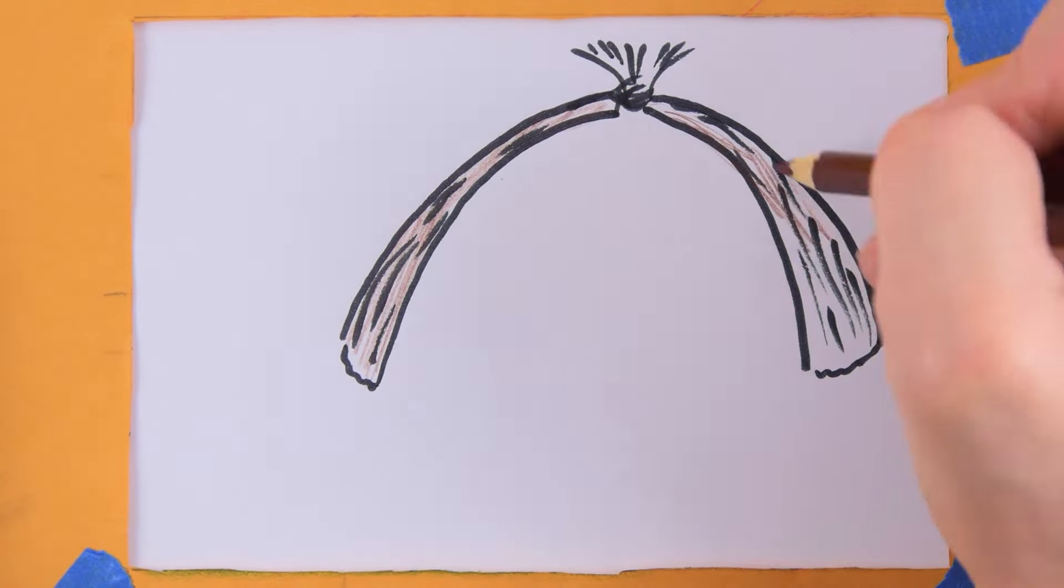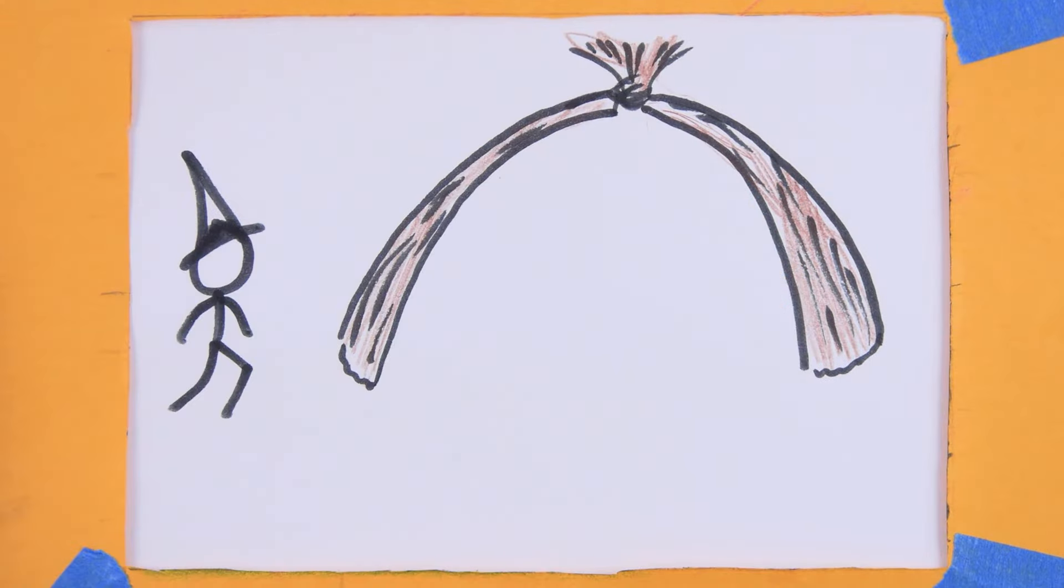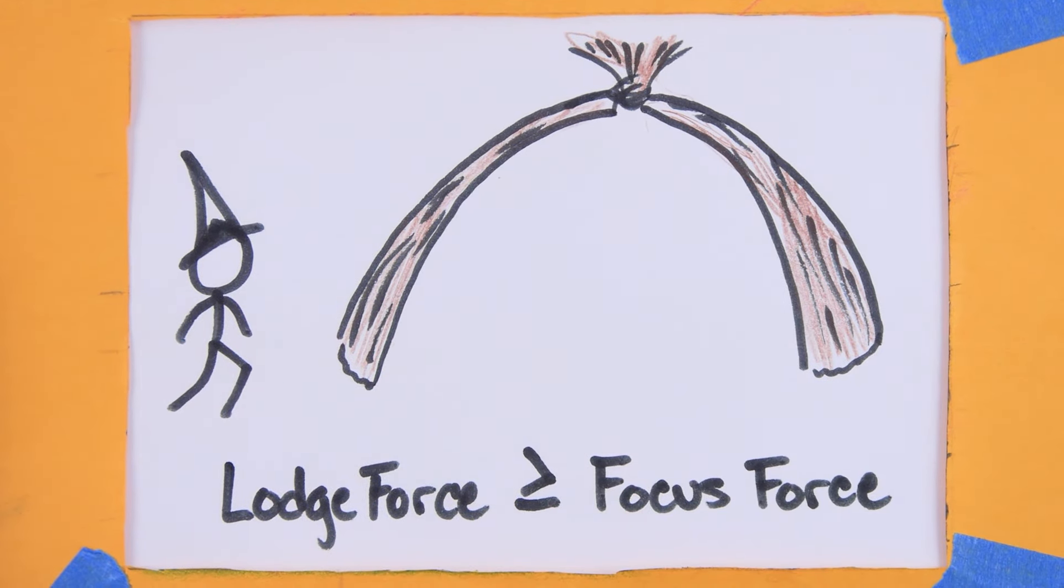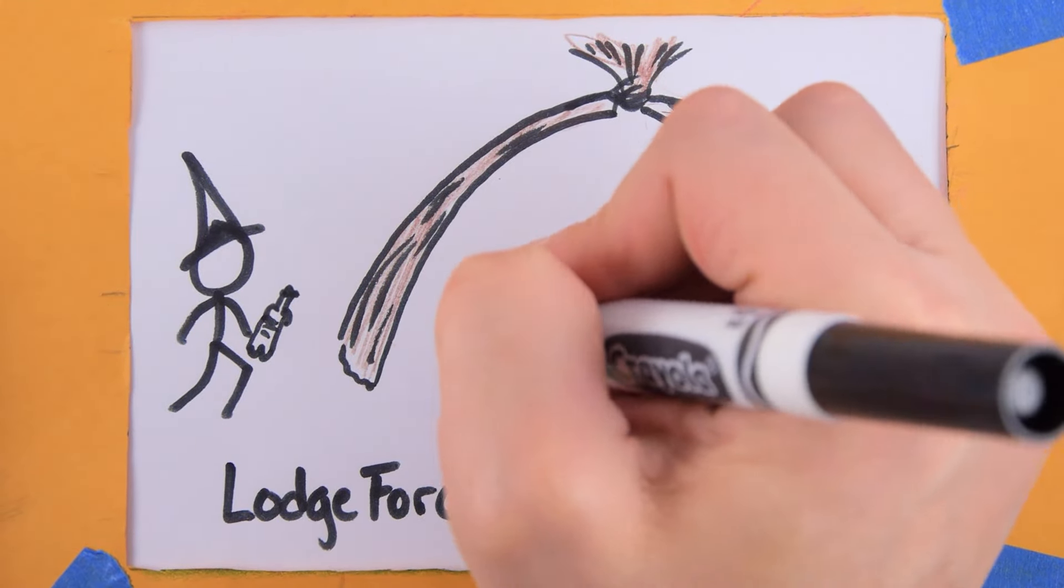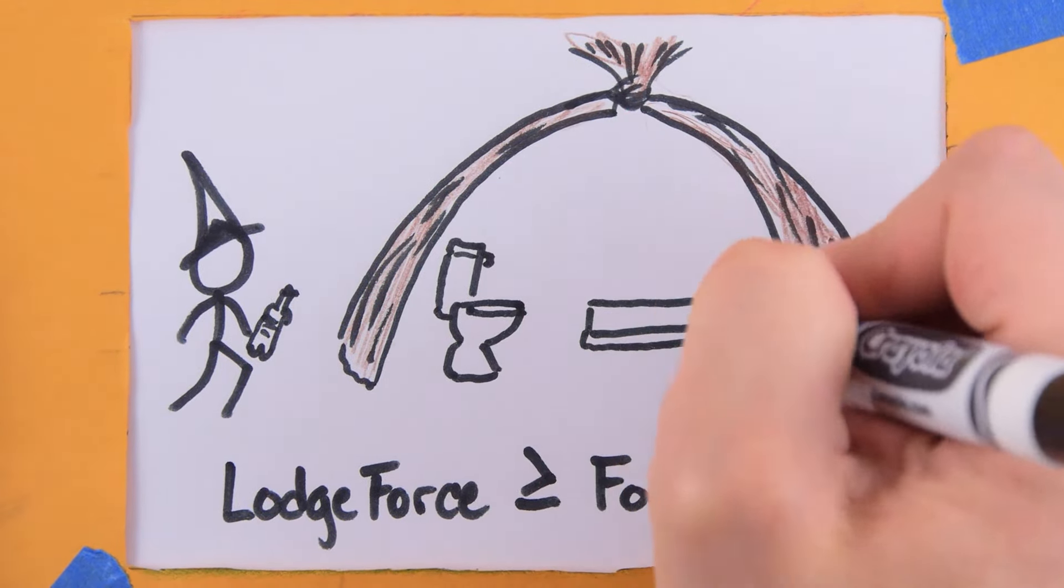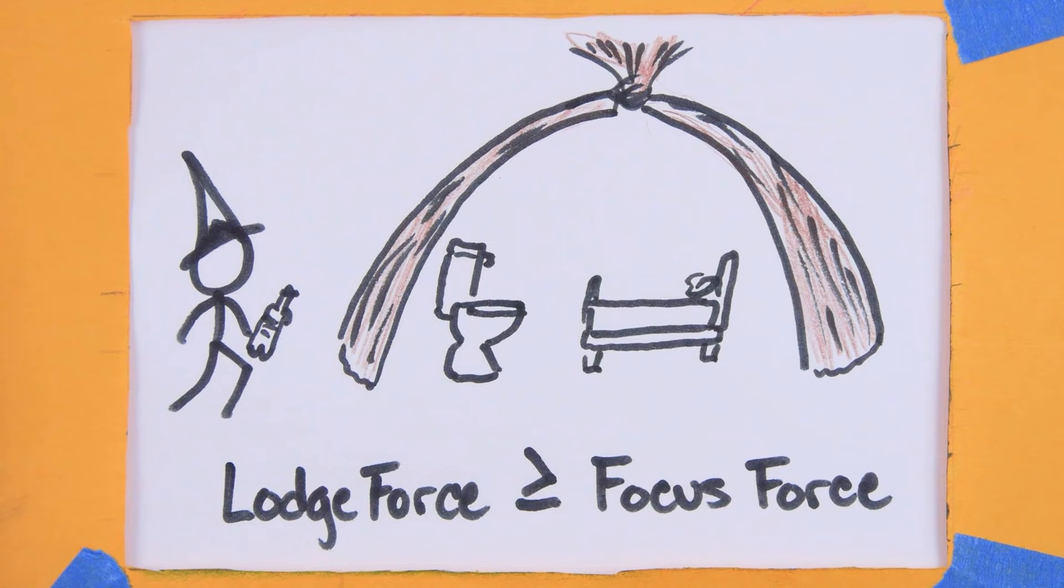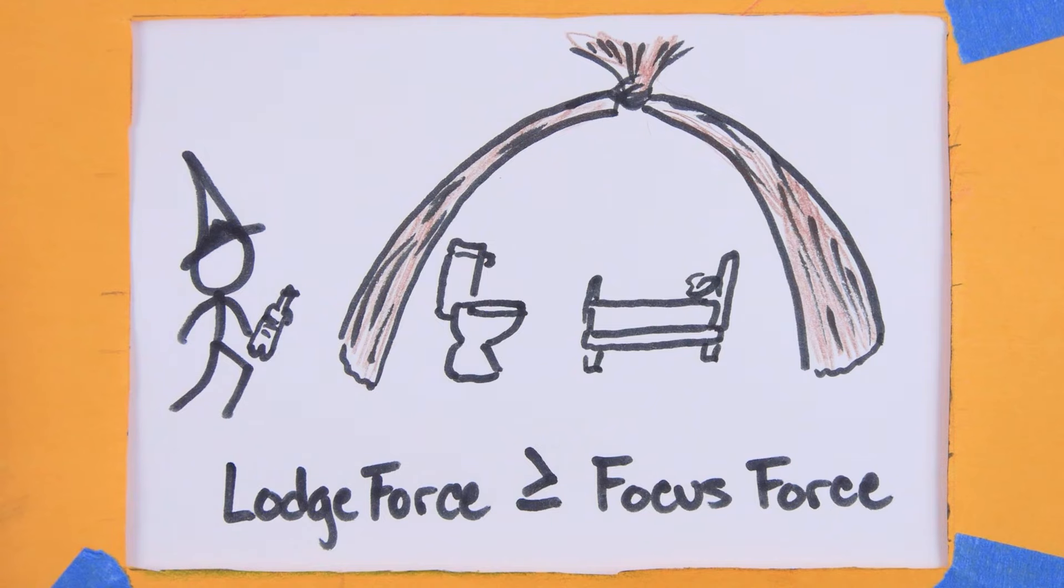Step 3: Prepare your lodge. You must have a magical lodge with a force greater than or equal to the force of the focus you wish to enchant. Make sure you have a bathroom incorporated into your lodge, a place to sleep, and plenty of food, because if you leave at any time during the enchantment process, you automatically fail.